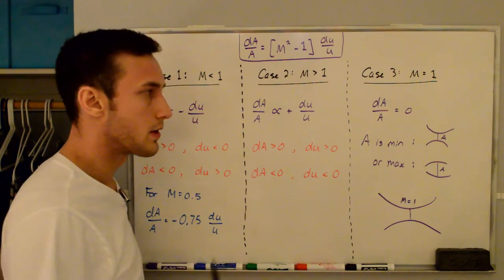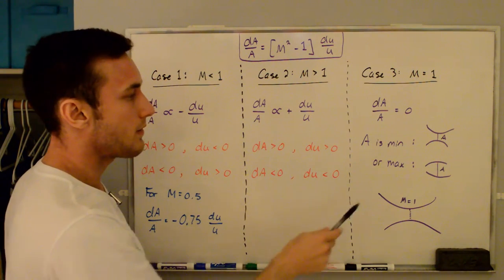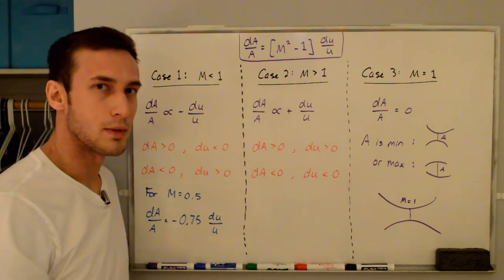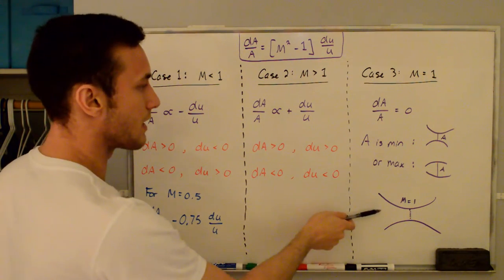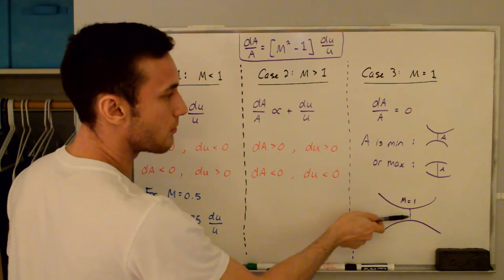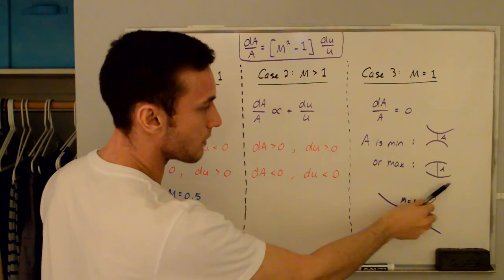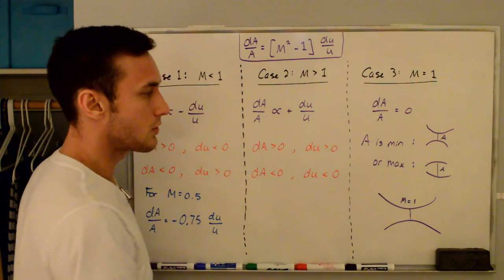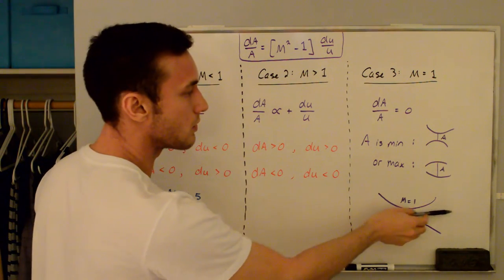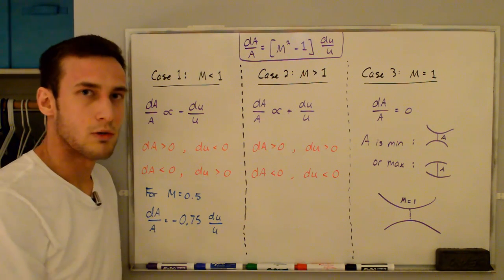The physically meaningful condition — area at a minimum — is extremely important in rocket nozzle and wind tunnel design. To accelerate a subsonic flow to supersonic flow, you must have a converging section followed by a diverging section, i.e., a throat at minimum area. Subsonic flow enters, the area decreases and velocity increases to sonic conditions at the throat where dA = 0. Then with the correct conditions, the area increases in the diverging section and the flow continues to accelerate to supersonic speeds. This will be discussed further in a video on converging-diverging nozzles — thanks for watching.